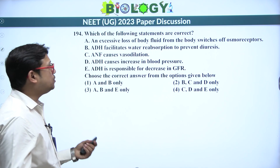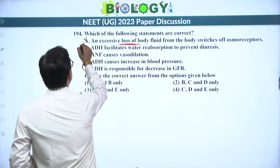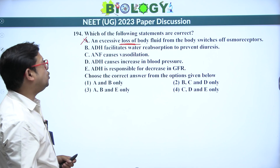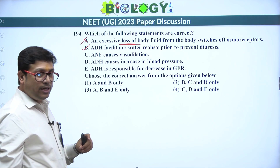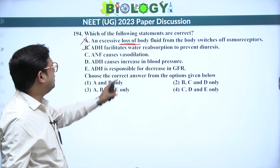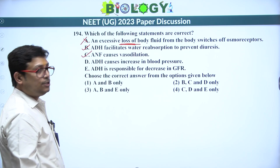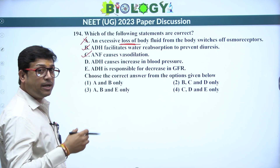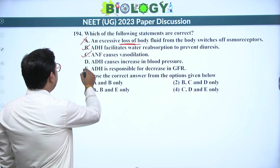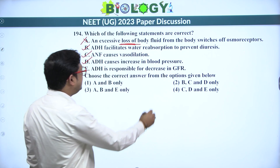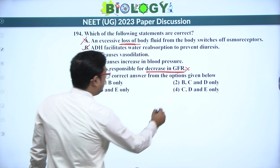Next: which statements are correct? Excessive loss of body fluid should activate osmoreceptors, not switch them off — so that statement is wrong. ADH facilitates water absorption to prevent diuresis — true. ANF causes vasodilation and decreases blood pressure — true. ADH causes increase in blood pressure by increasing water absorption, increasing blood volume — true. ADH is responsible for decrease in GFR — this is wrong; GFR would increase. Correct statements are B, C, and D — answer is 2.